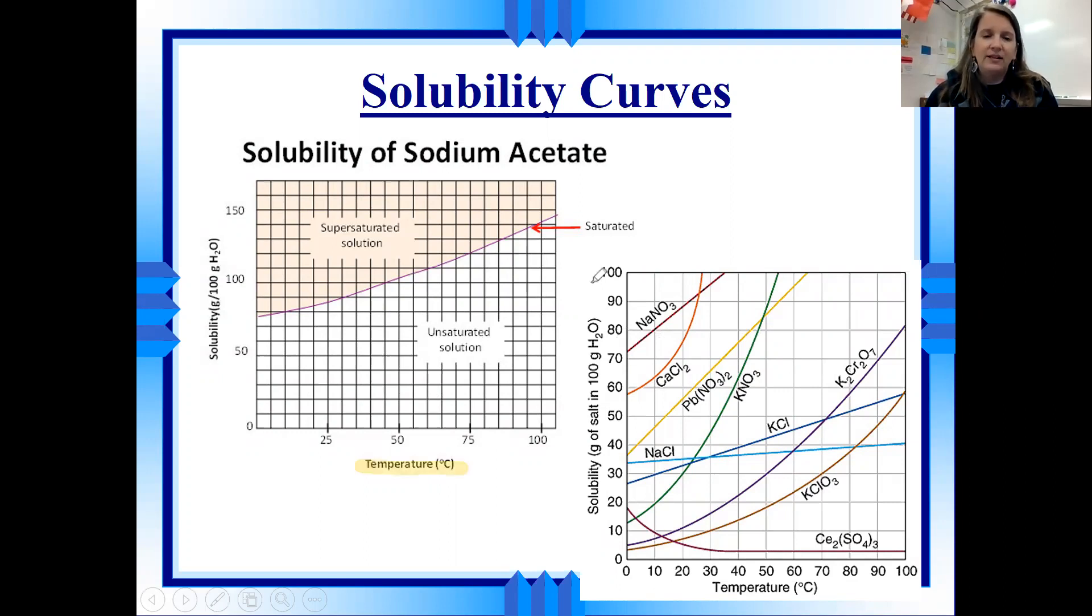On the bottom axis here, the x-axis, you're going to see that it's the temperature in Celsius. On the y-axis, that's the solubility. And it says grams per 100 grams of water. What does that mean?